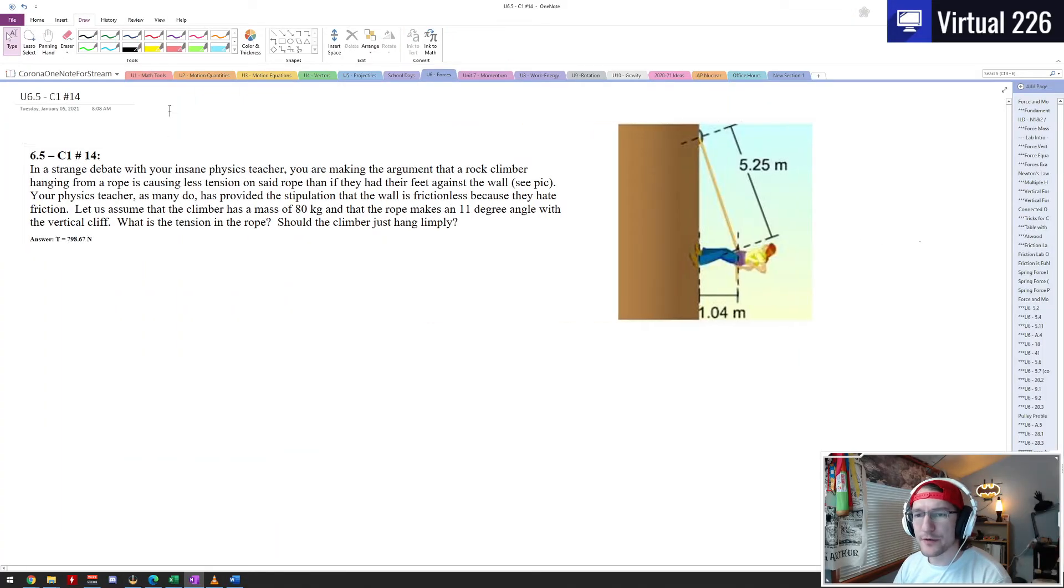Phasing in, okay. So in this translational equilibrium problem what we have is kind of a climber here. We are debating your possibly insane physics teacher, and we're making the argument that a rock climber hanging from a rope is going to actually put less tension on that rope than if they put their feet against the wall.